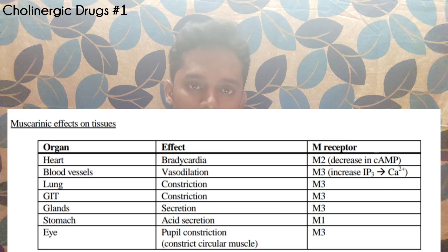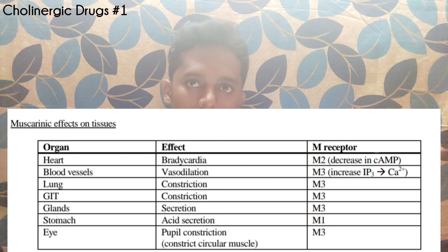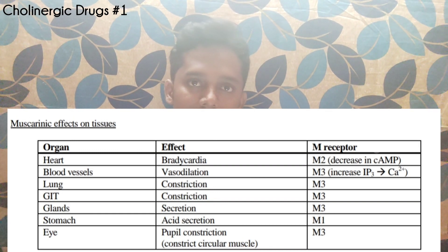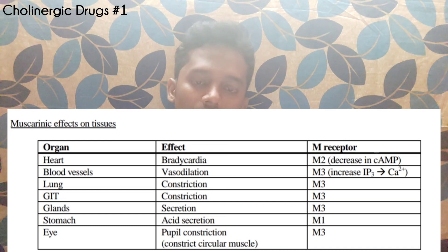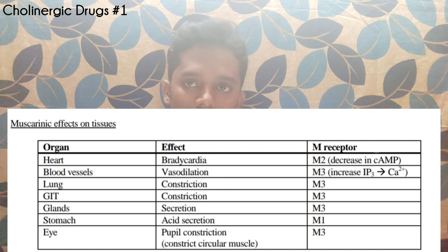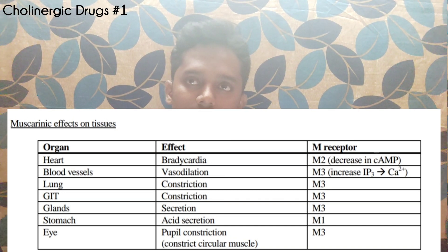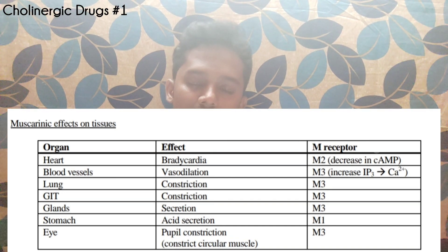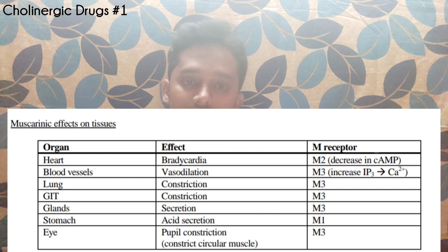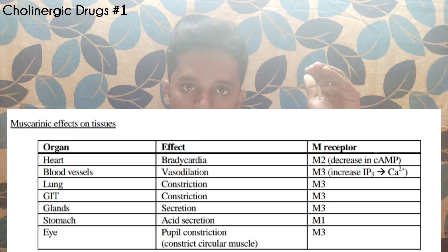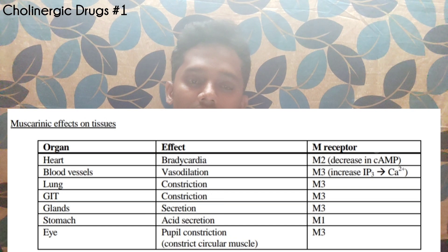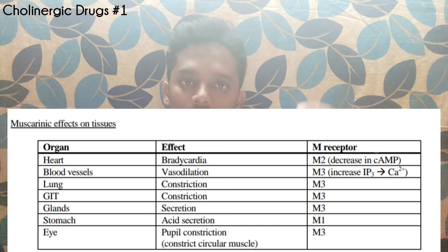Now, what are the actions of these cholinergic drugs at these receptors? If a cholinergic drug activates the M1 receptor — which is in the stomach — acid secretion in the stomach increases. That is the action of M1. For M2 receptor — which is in the heart — the heart rate decreases, meaning bradycardia occurs. The muscarinic receptor activation lowers heart rate, so bradycardia is the result.